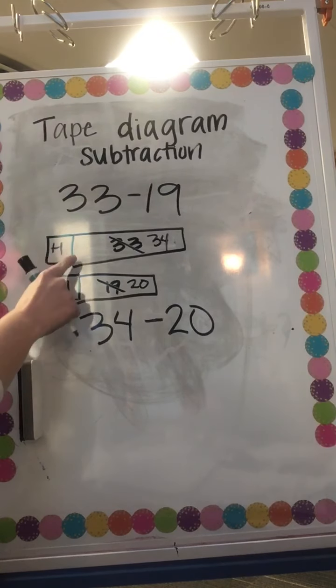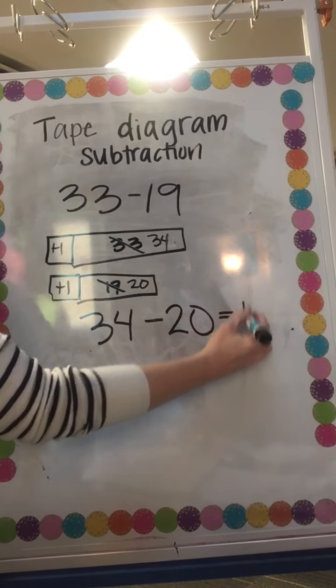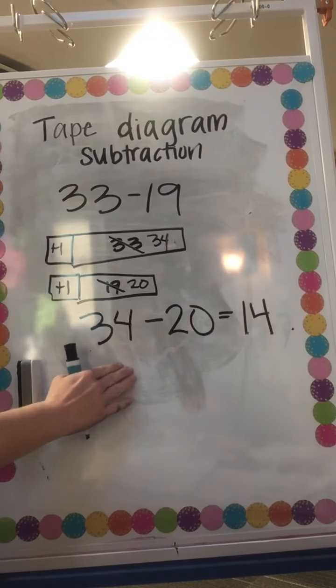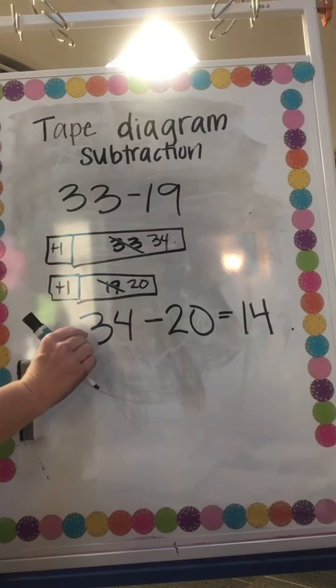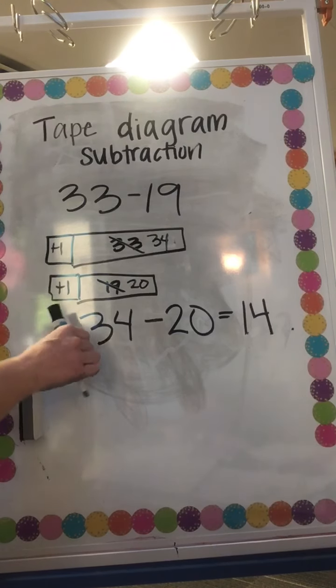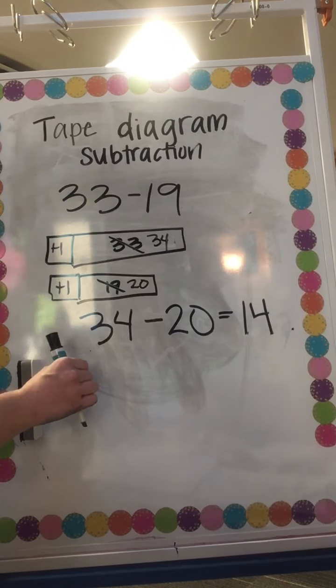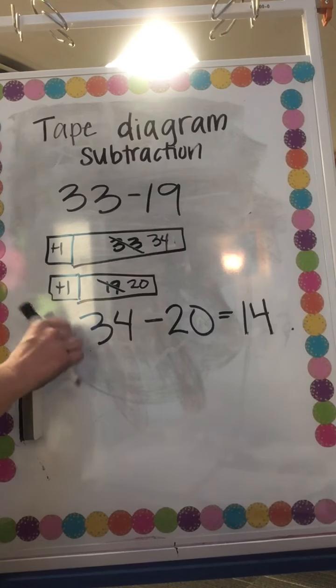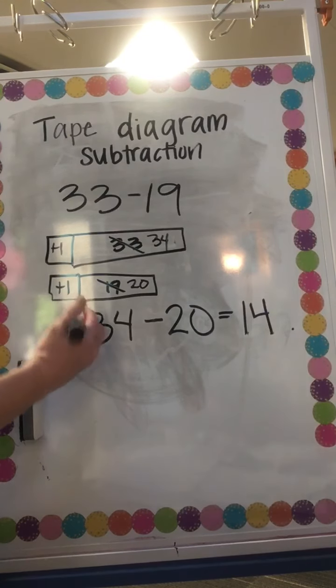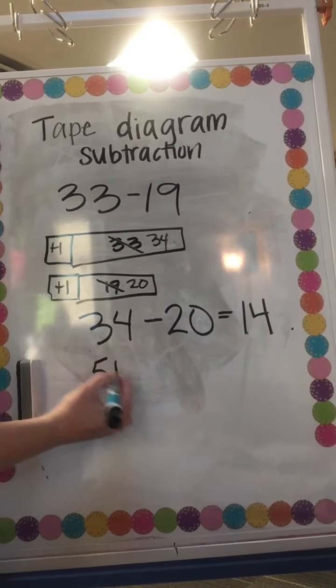And we know on our hundreds chart when we have 34, if I just hop up 10, 20, then that's gonna get me 14. So this is the tape diagram with subtraction. Watch it a couple times, practice it on your own.